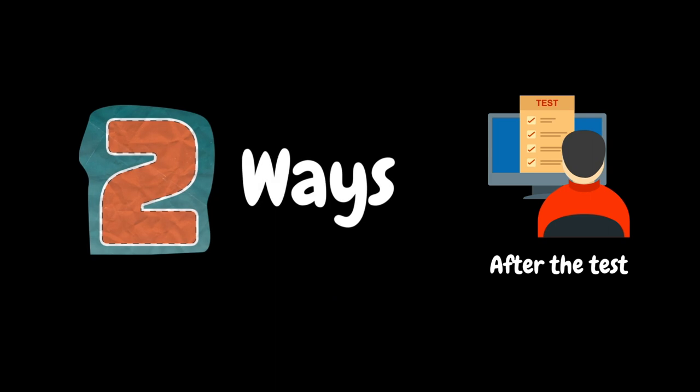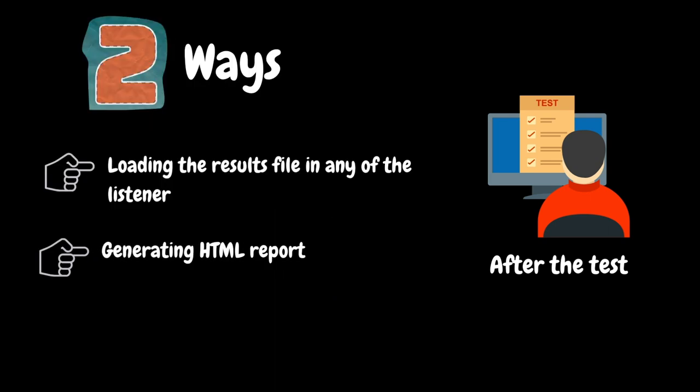Even after the test run, results can be viewed in two ways. First, we can load the results file into any listener in the JMeter interface and then perform the analysis. The second method is generating an HTML report — this can be done in two ways: one through the JMeter user interface, and another automatically from the command line using the -e option.